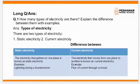Long question answer — start on the next page. Question number 1: How many types of electricity are there? Explain the difference between them with examples. Heading: Types of electricity. There are two types of electricity: 1. Static electricity. 2. Current electricity. Then give a heading: Difference between static electricity and current electricity.